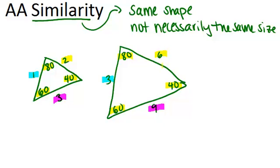So the corresponding sides are proportional and the scale factor is three. Now it can be a lot of work to check all the sides and all the angles to show that two triangles are similar. So there's a couple shortcuts and one of them is the AA similarity shortcut.